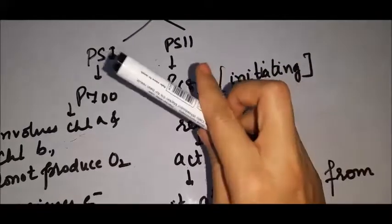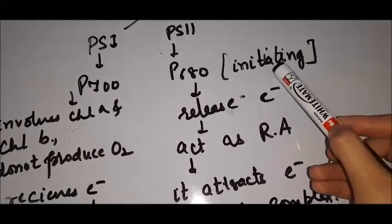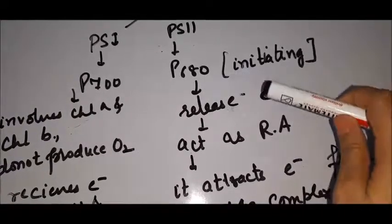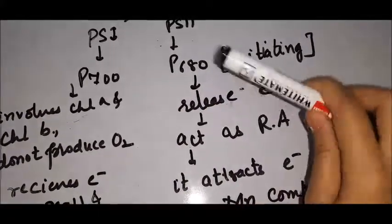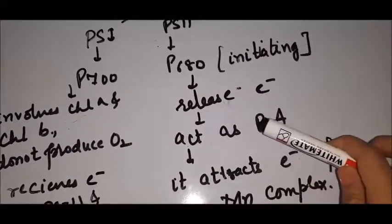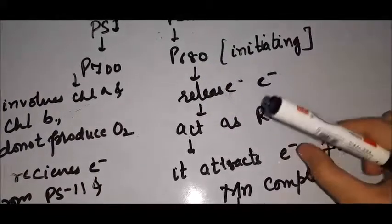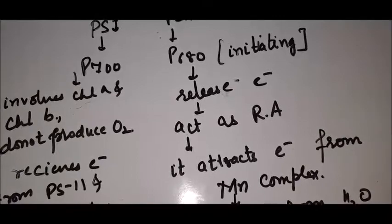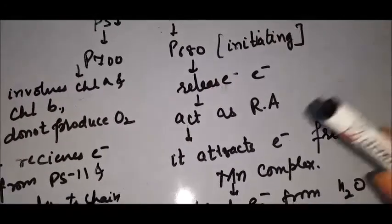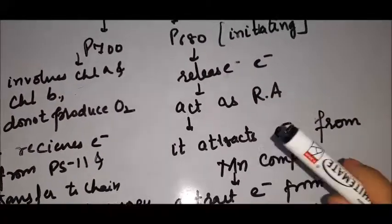There are two photosystems: PS2 is P680 and PS1 is P700. P680 is the initiating photosystem. When light is absorbed, an electron is released and transferred to P700 for further reaction. P680 acts as a reducing agent. In the dark (ground state), P680 absorbs light, reaches the excited state, and transfers an electron to P700.